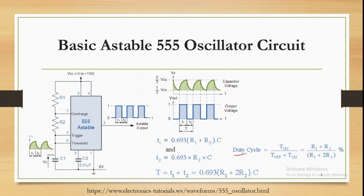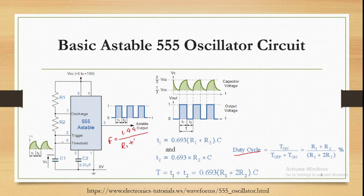In duty cycle, T-on is equal to T-off plus T-on. This is the duty cycle in case of this astable 555 timer IC. The frequency is given as f equals 1.44 divided by (R1 plus 2·R2) multiplied by C.